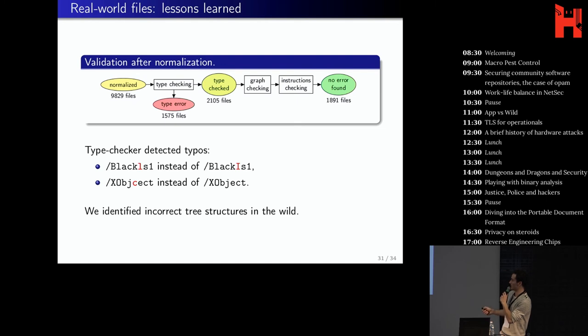So the main part of improvement is the type checking. Because the specification is so big, it's like 700 pages. We didn't implement everything yet. But we already have some type errors. For example, we could detect some typos. So here a L instead of an I, or here additional letters. This, we could only do it because we implemented the type checker. And with the simpler tool, you cannot detect that. So this is cool. And also we identified incorrect tree structures in the wild.